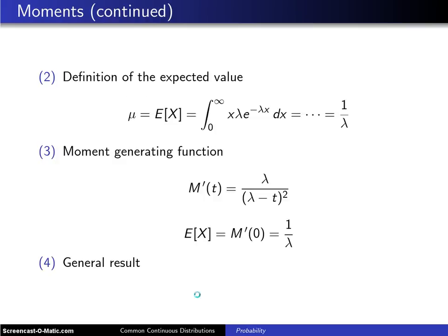A second way of calculating the moments is to use the definition of expectation. For example, to get the population mean mu, which is the expected value of x, that will be the integral over the support from zero to infinity of x multiplied by the probability density function f of x.